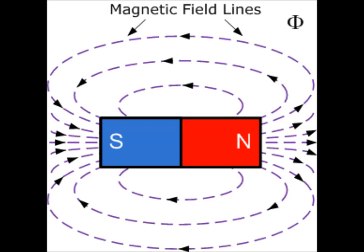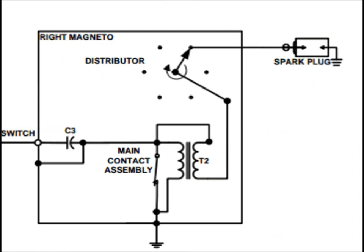The current from the primary winding flows to both the breaker points and the capacitor, which are wired in parallel. When the breaker points are closed, the primary winding is grounded and the current flows directly into the case. When the breaker points open, the field in the primary coil collapses.